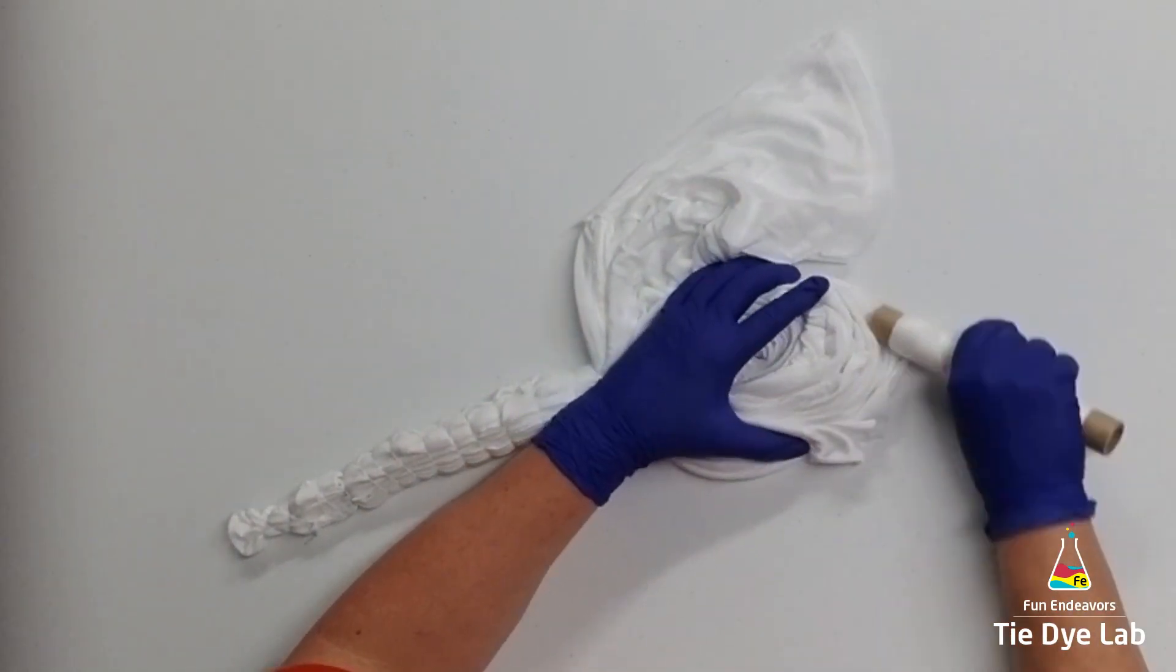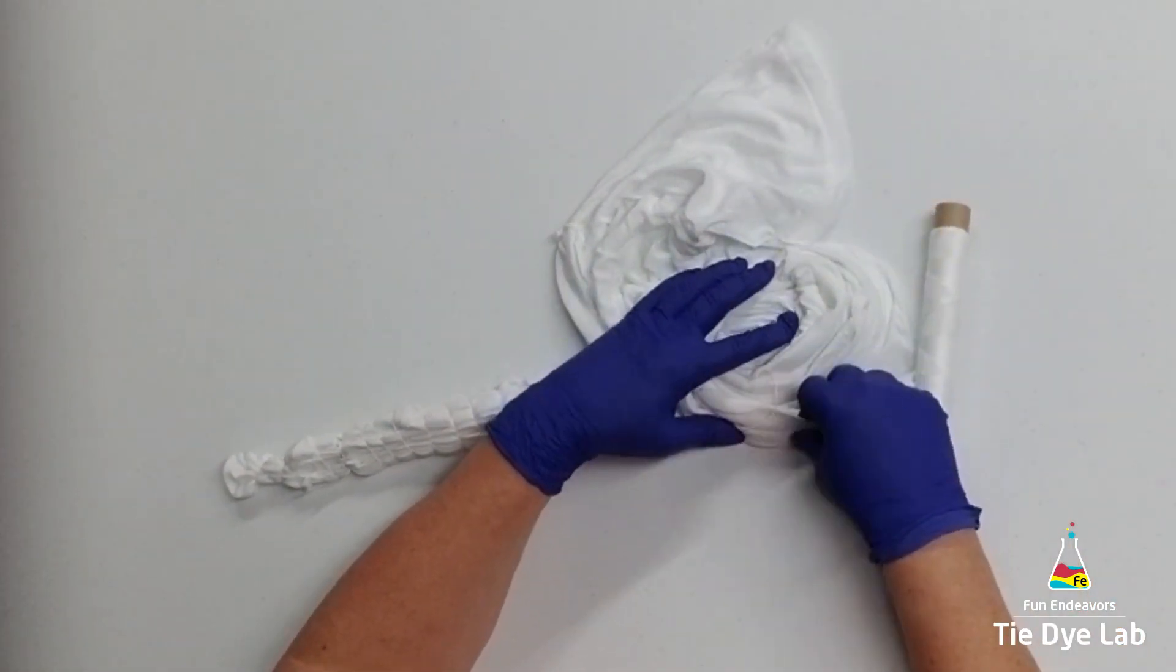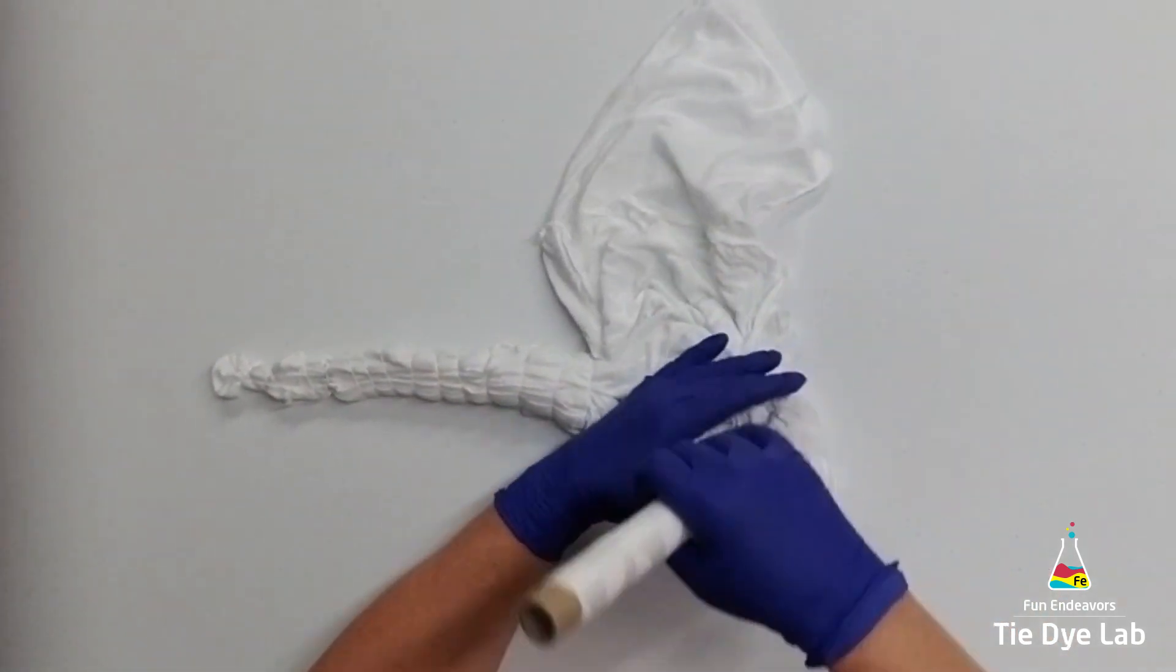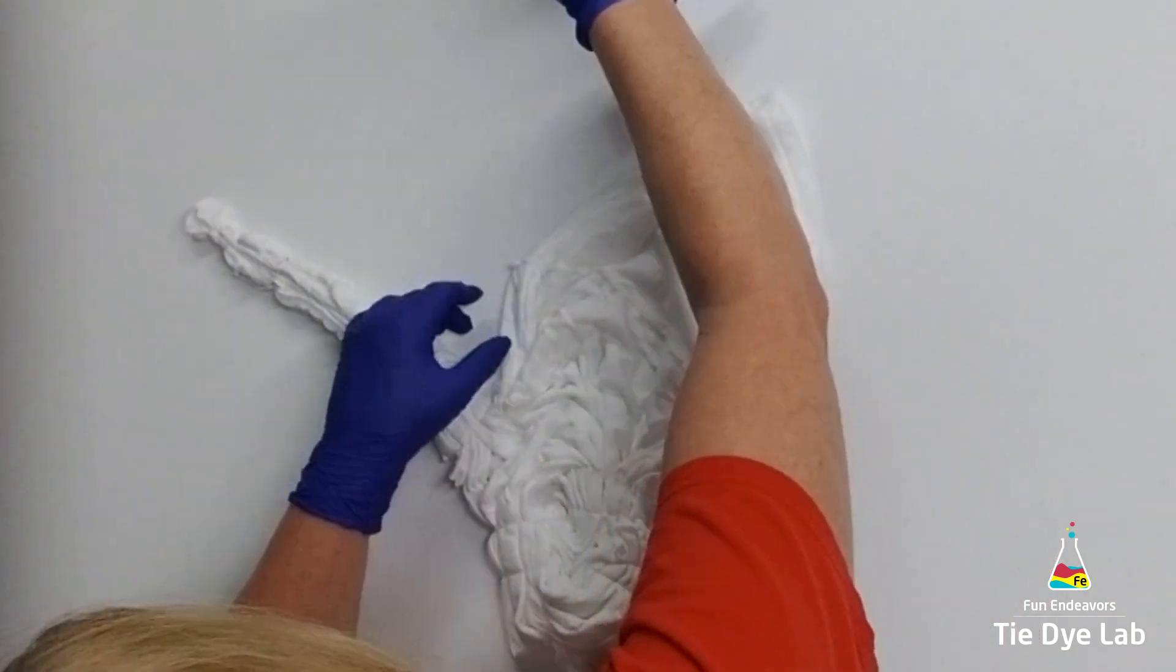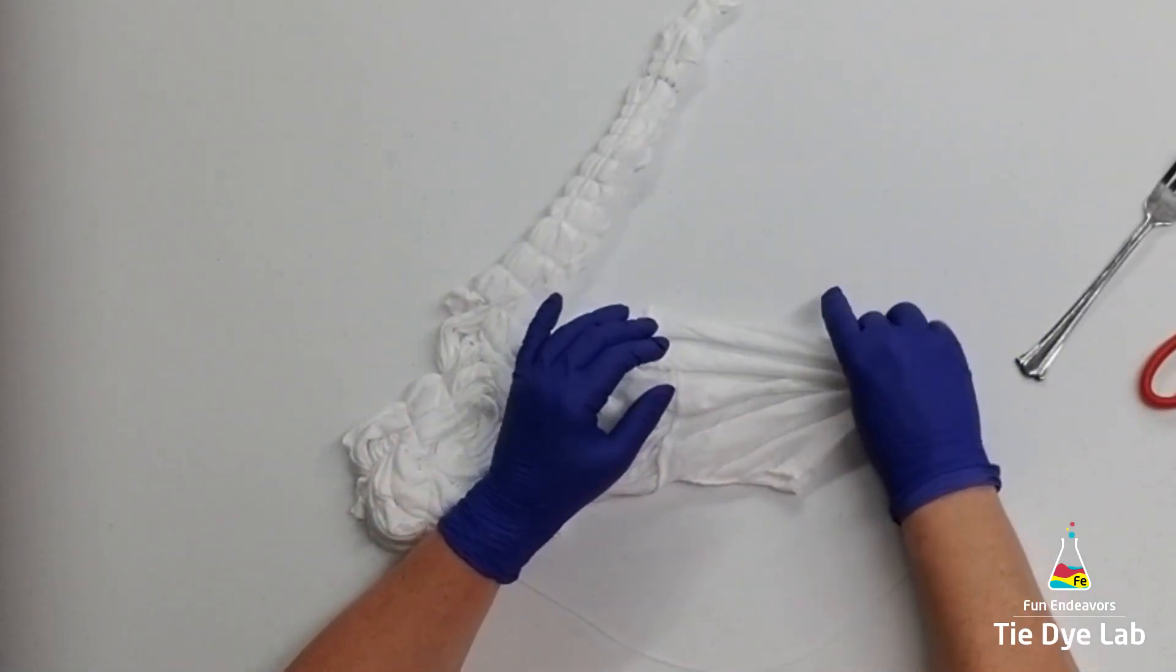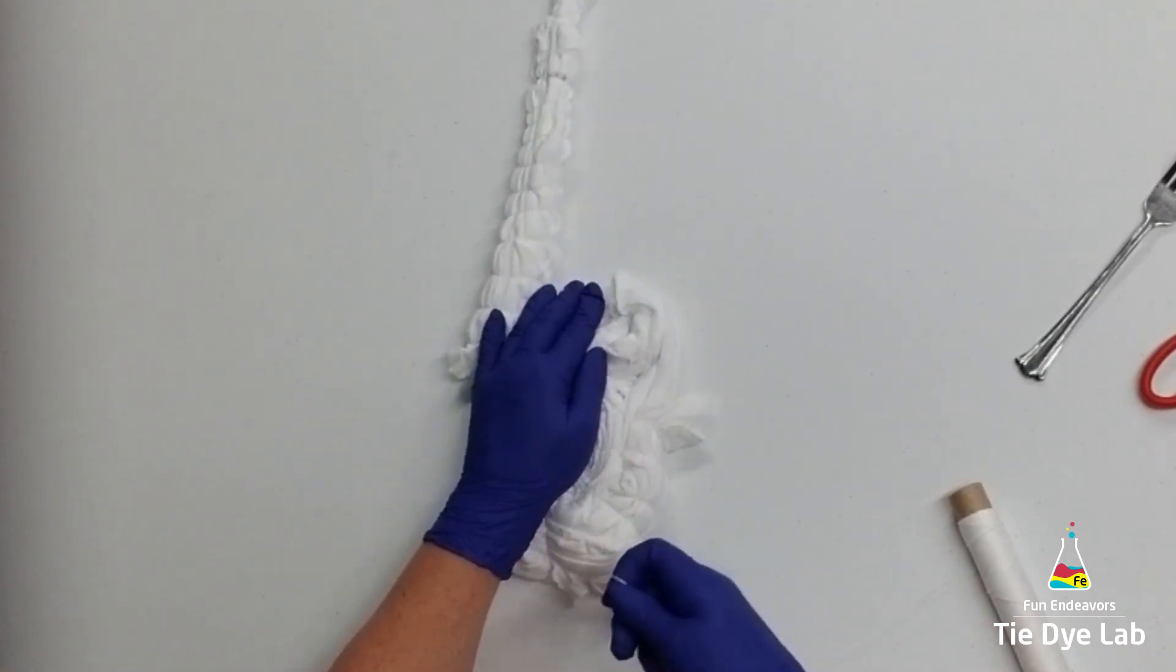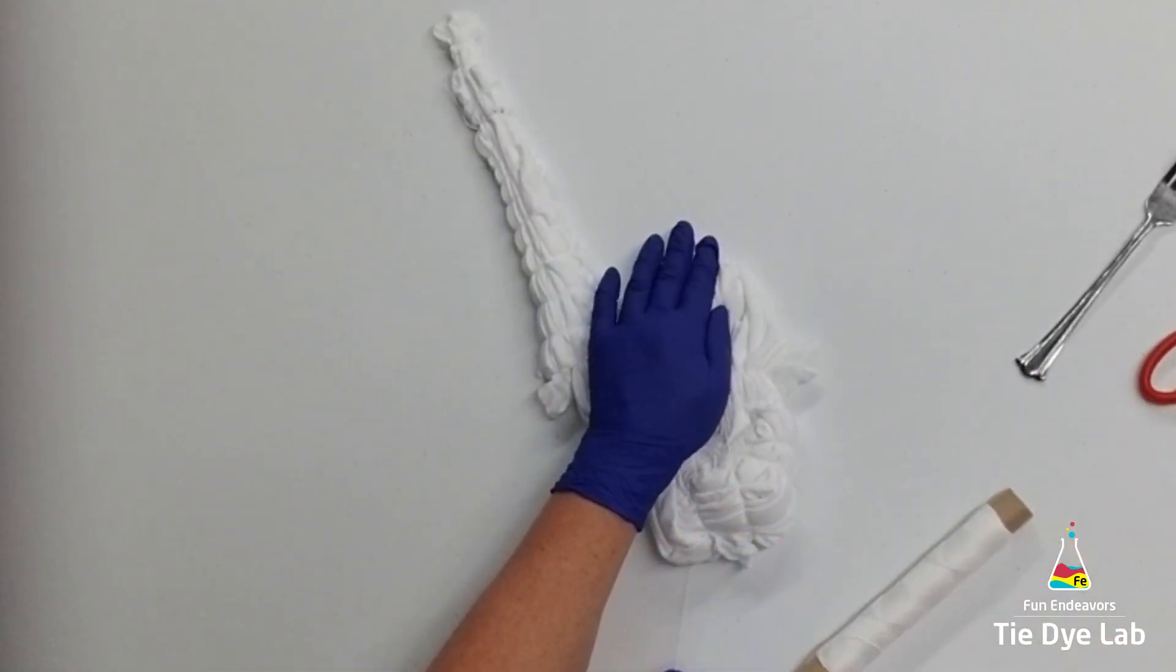I have one sleeve that I haven't done anything with, so after I tie up my spiral, I'm going to fold it. For this sleeve, I'm just going to kind of flatten it out, and I'm going to grab the very end of it and start to spiral it down on top of itself. Then I'm just going to tie it in with the rest of the shirt using the kite string.